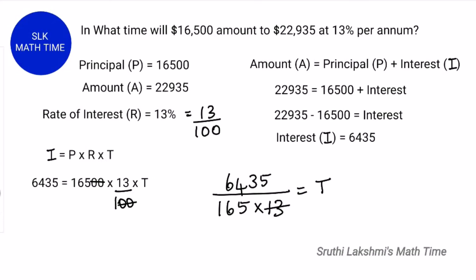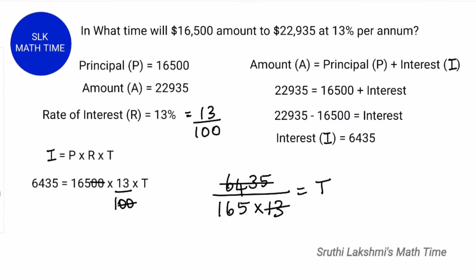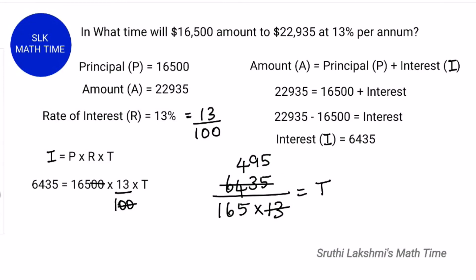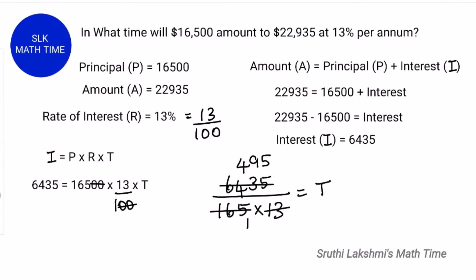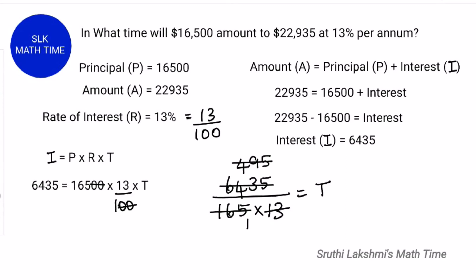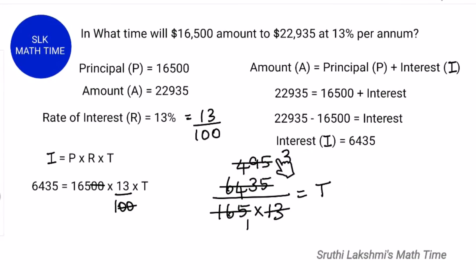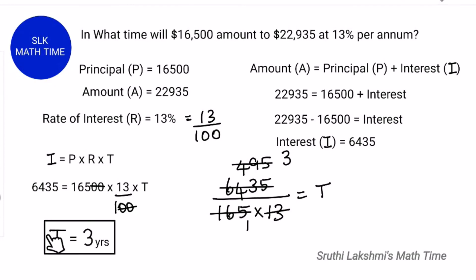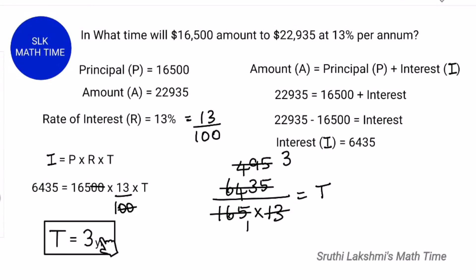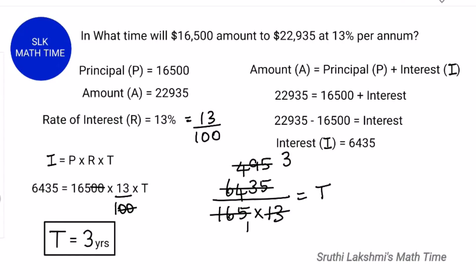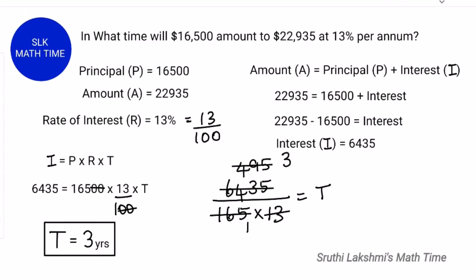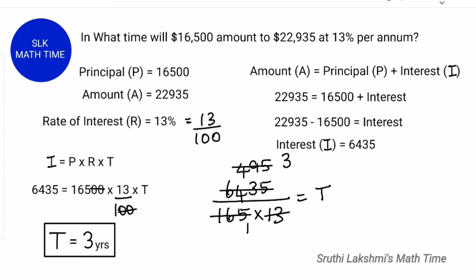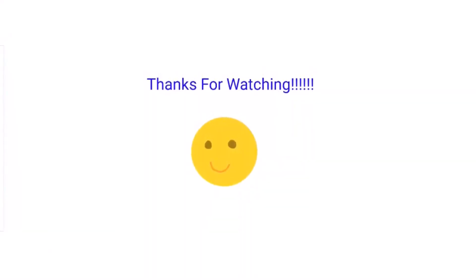So 1 times 13 is 13 and 495 times 13 is 6435, and 1 into 165 is 495. From this we find that T is 3 years. So in three years, $16500 will amount to $22935 at 13% per year. Thanks for watching.